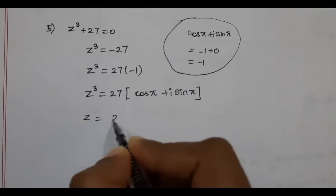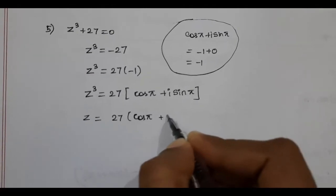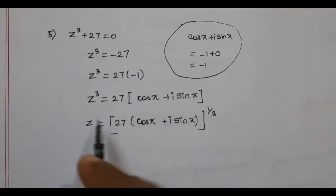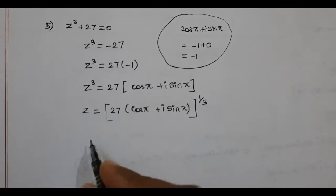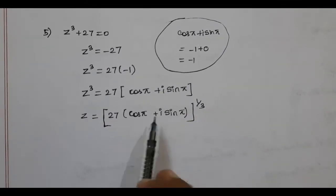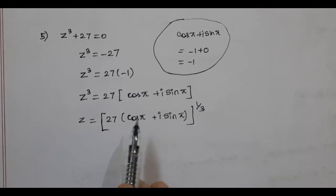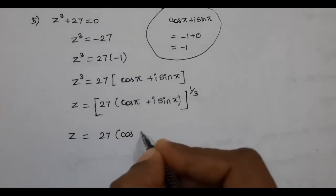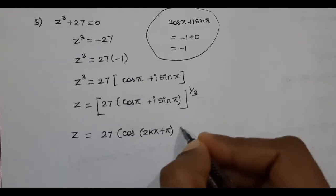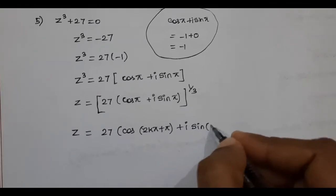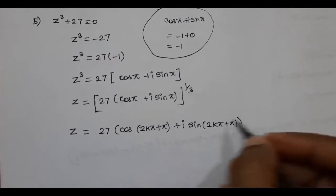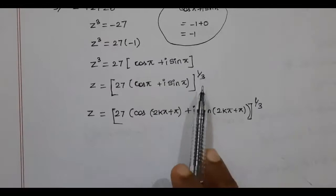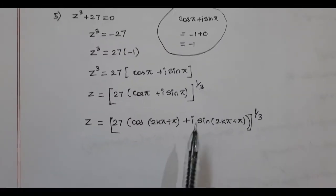So z = [27 × (cos π + i sin π)]^(1/3). Using the polar form, we change this to the alternate form for applying De Moivre's theorem.